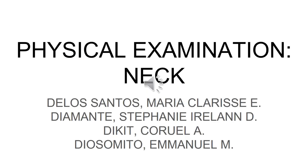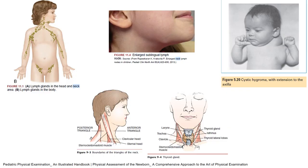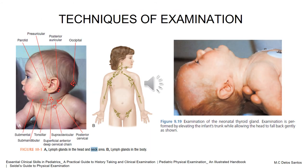Physical Examination of the Neck. Inspection: inspect the baby's neck looking for midline masses, clefts, lateral neck masses, or sinuses. Look for neonatal torticollis — head tilt — caused by shortening of the sternocleidomastoid muscle, commonly due to a fibrous tumor over the muscle, the so-called sternomastoid tumor. Also look for neck edema, webbing, or redundant neck skin with a low posterior hairline.